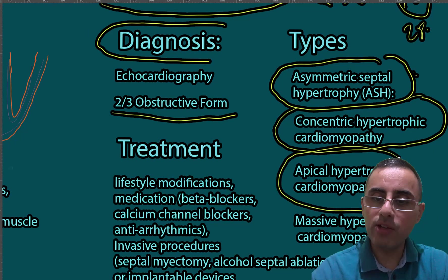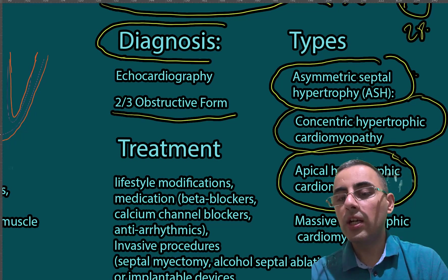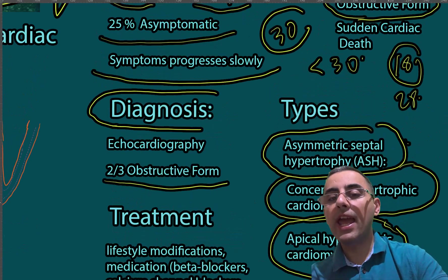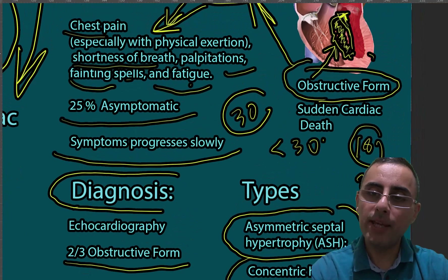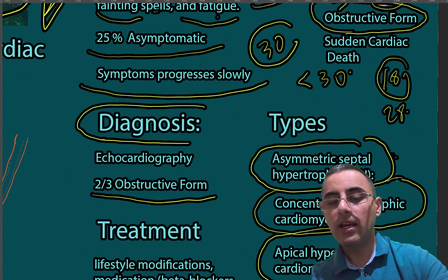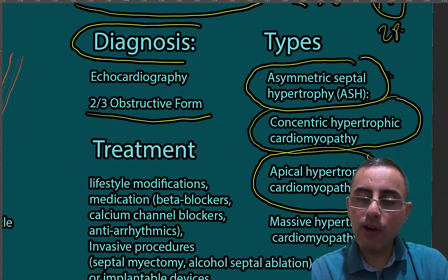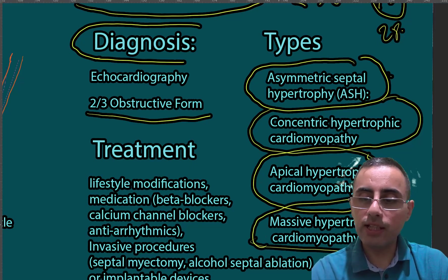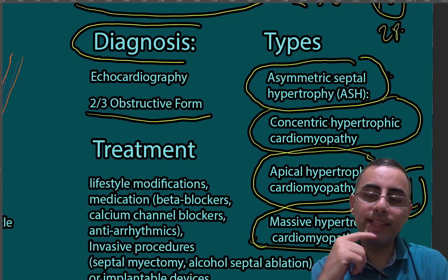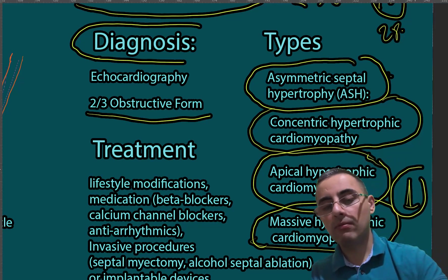Atypical hypertrophic cardiomyopathy is a much rarer form and is more common among people of Japanese descent, with hypertrophy occurring at the apex of the heart. Massive hypertrophic cardiomyopathy, also known as malignant hypertrophic cardiomyopathy, is represented in only one percent of cases and is the most severe form of the disease.